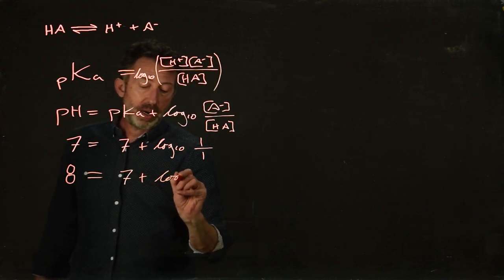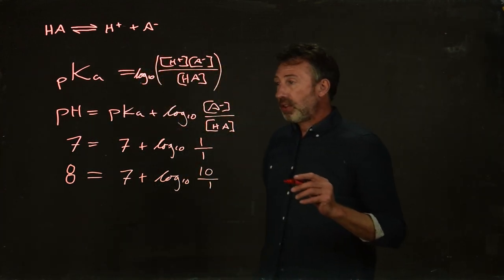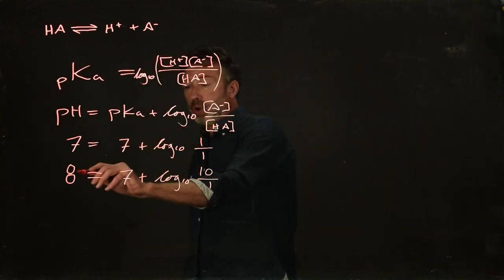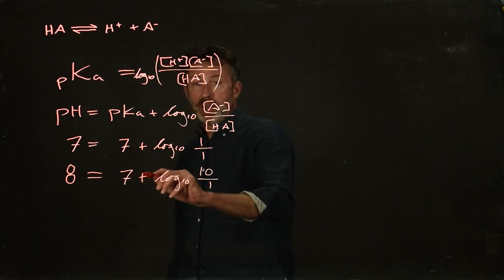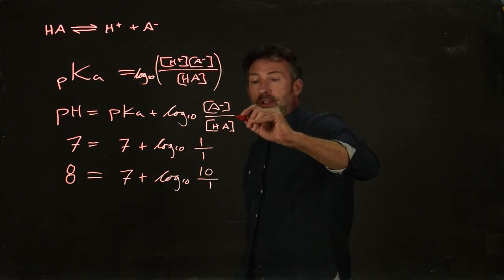Now, the log 10 of 10 is equal to 1. So that means that when the pH is one pH unit above the pKa, there's tenfold more of this form than there is of this form.